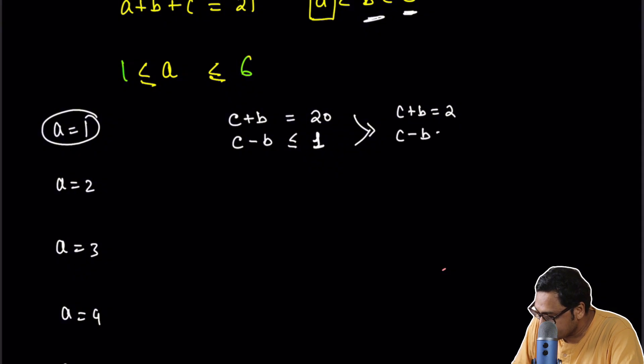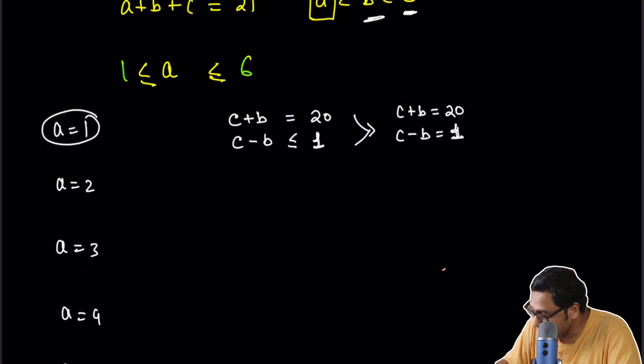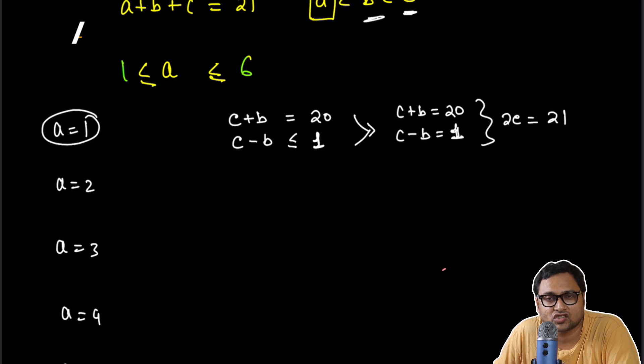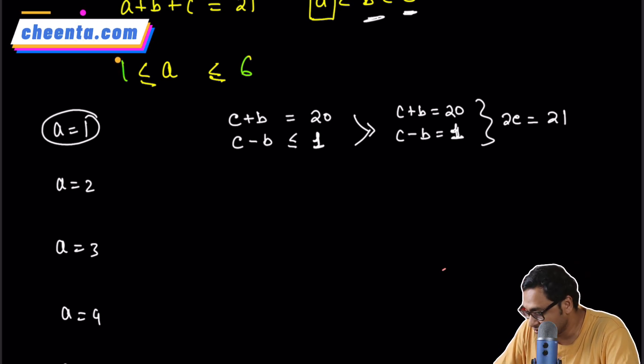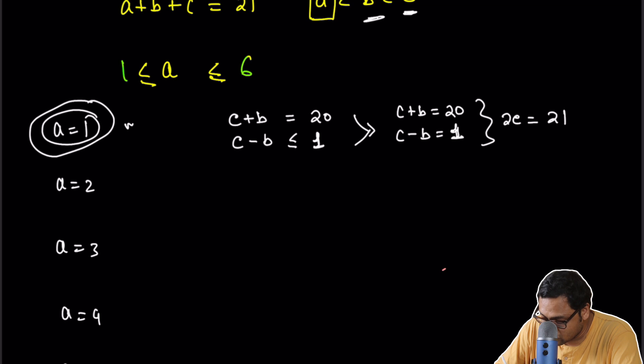But wait, that means 2C is 21. I'm just adding it. But that makes C a fraction. So we cannot have a solution from here. There is no solution. C cannot be a fraction, cannot be 10.5. Okay, so for A equal to 1, there is no solution. Just like this, we will go through all other cases.